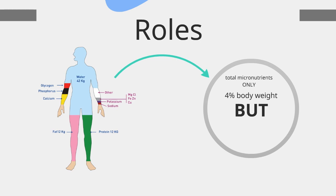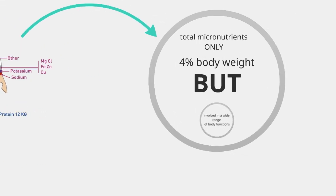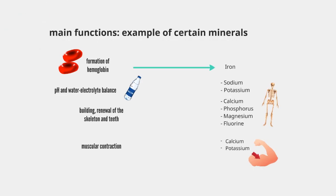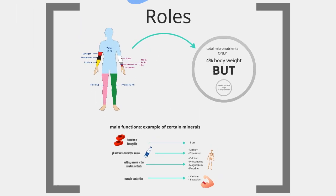In total, these mineral materials represent only 4% of body weight, but are involved in a wide range of body functions, such as formation of hemoglobin, pH and water electrolyte balance, building, renewal of the skeleton and teeth, and muscular contraction. Finally, with the exception of iodine and fluorine, all other minerals have multiple roles.